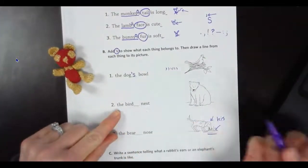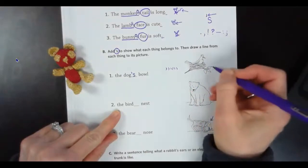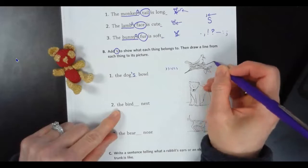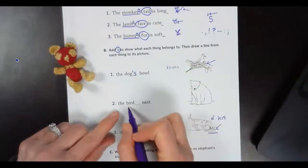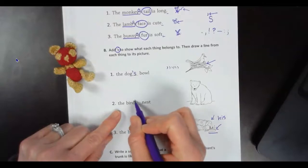All right. The bird nest. All right. So here's our bird sitting in the nest. Bird nest. What belongs to the bird? The nest. How do we say that in a sentence? How do we show that? Yes. An apostrophe S.